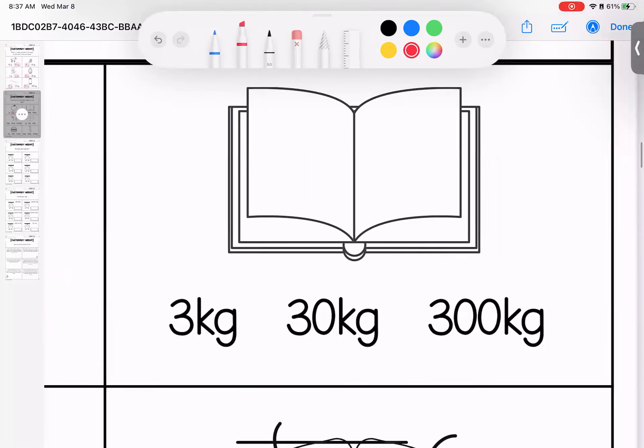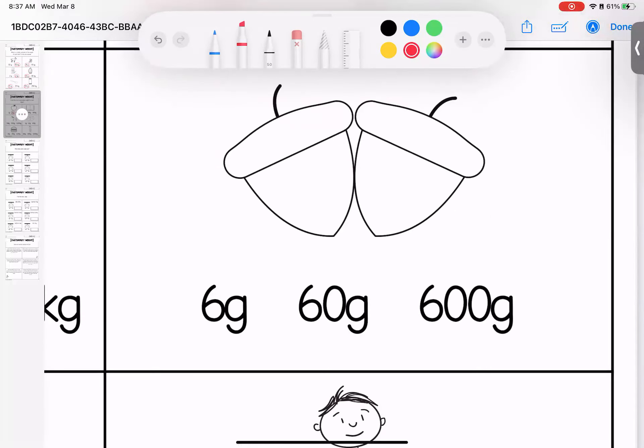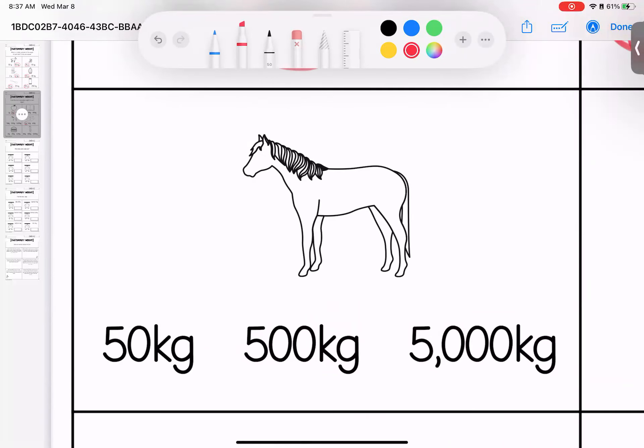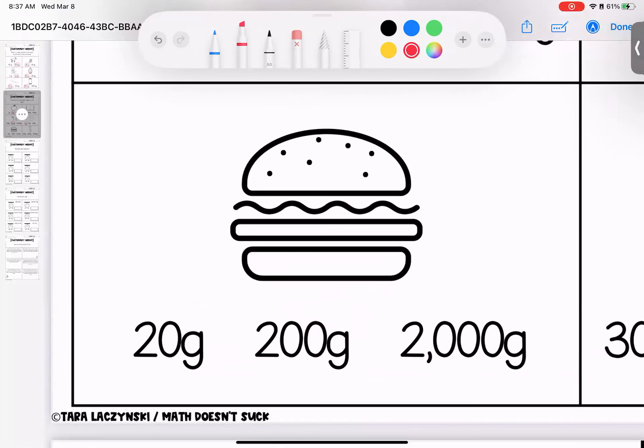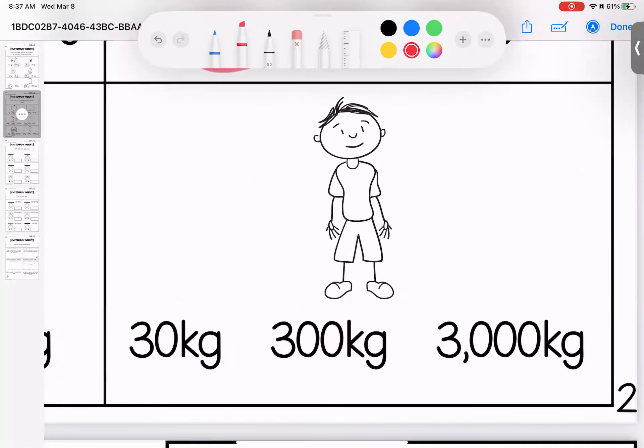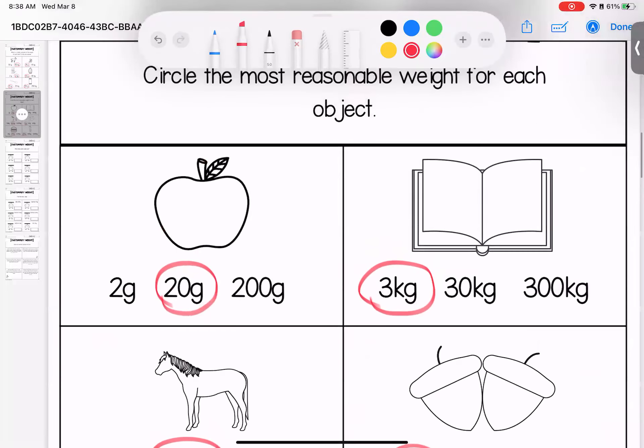For a book, would it be three pineapple, 30 or 300? Three pineapple would be the most reasonable answer. Thinking about paperclips, an acorn, six, 60 or 600? Six would be the most reasonable. For a horse, 50 pineapple, 500 pineapple, or 5,000? We're going to say 500. A burger, 20 paperclips, 200 or 2,200 is the most reasonable. And a small little boy, 30 pineapple, 300 or 3,030 would be the most reasonable. Any questions on these? Bring them with you to class.